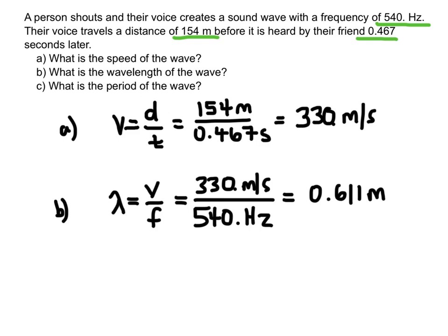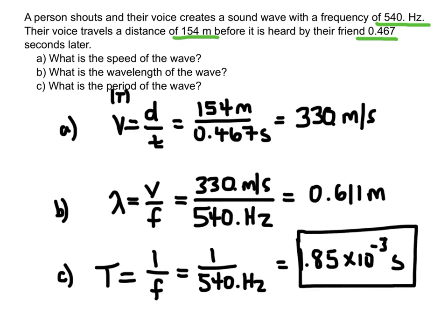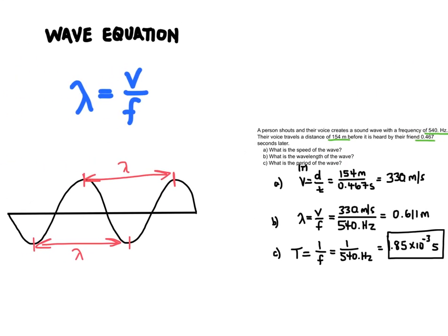Finally, we'll solve for the period of the wave. We use the symbol T for period. The period is the time it takes for one wavelength to pass by a point, and it is the inverse of the frequency. So to find the period, we take 1 and divide it by the frequency. Plugging in the numbers, I end up with 1.85 times 10 to the negative 3 seconds. Period is measured in the SI unit of seconds because it is a time. And that is the wave equation and how to use it.